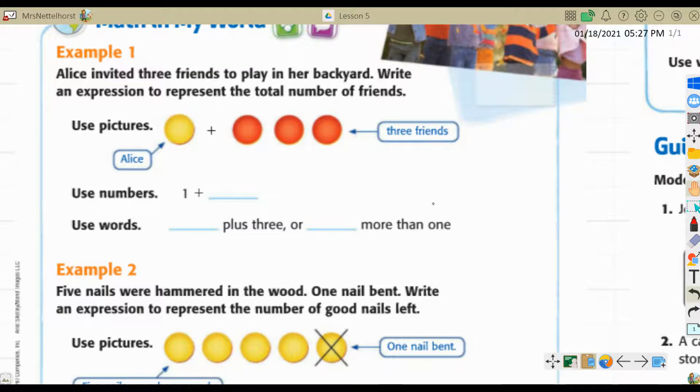Let's look at some examples. Example one, Alice invited three friends to play in her backyard. Write an expression to represent the total number of friends. So first we're going to use pictures. The yellow dot is Alice and her three friends are red dots. We are going to use numbers for this one. One plus three. You can use words as well. You can write one plus three, or you can say three more than one.